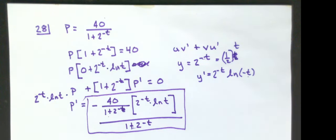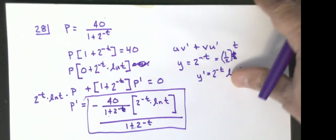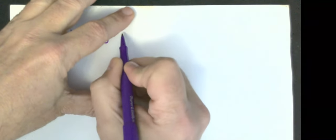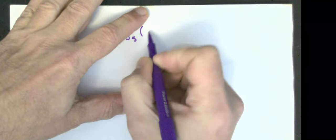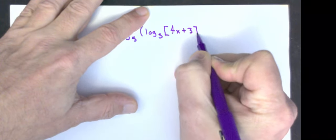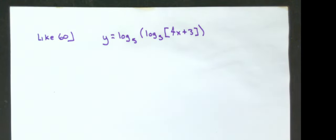Problem 42 is straightforward. For problem 60, you're doing a log of a log. I'm going to do one similar to 60: y equals log base 5 of log base 5 of (4x + 3). That makes it similar to what you have.